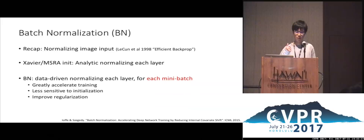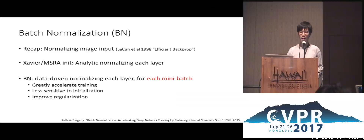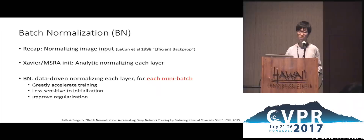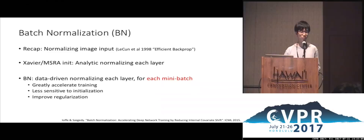Before the prevalence of deep learning, people realized that to train a neural network, you should normalize inputs by mean and standard deviation. Xavier and MSR initialization analytically normalize the mean and STD for each layer based on linear or independence assumptions. Batch normalization is a data-driven normalization of each layer, done for each mini-batch — which is why it is called batch normalization. Batch norm greatly accelerates training and makes the network less sensitive to initialization, and also helps generalization due to noise introduced into batch statistics.